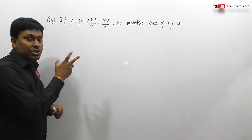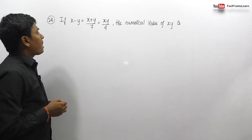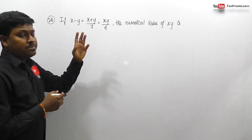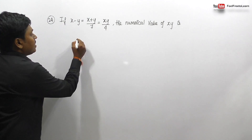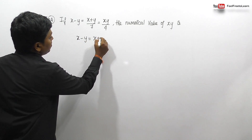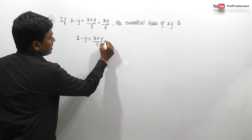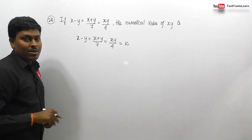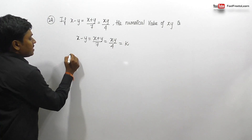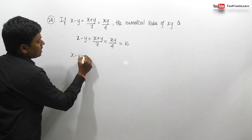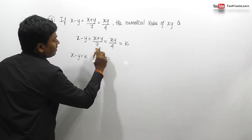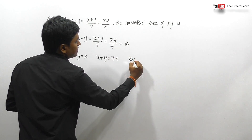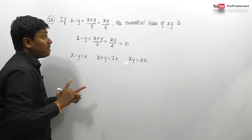This question is similar to the previous one — all three terms are equal. Setting (x - y) = (x + y)/7 = xy/4 = k, we get: x - y = k (equation 1), x + y = 7k (equation 2), and xy = 4k.